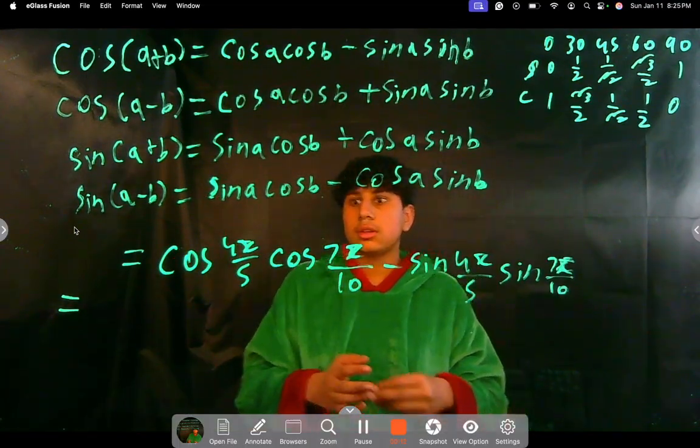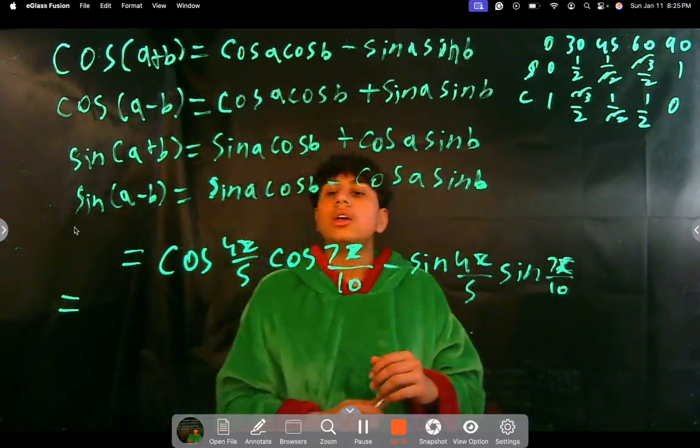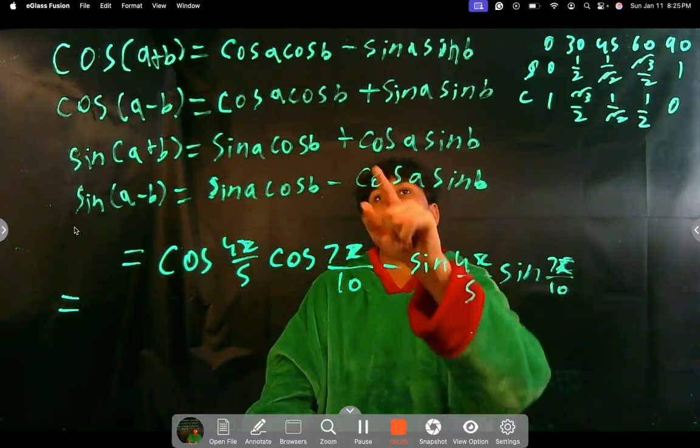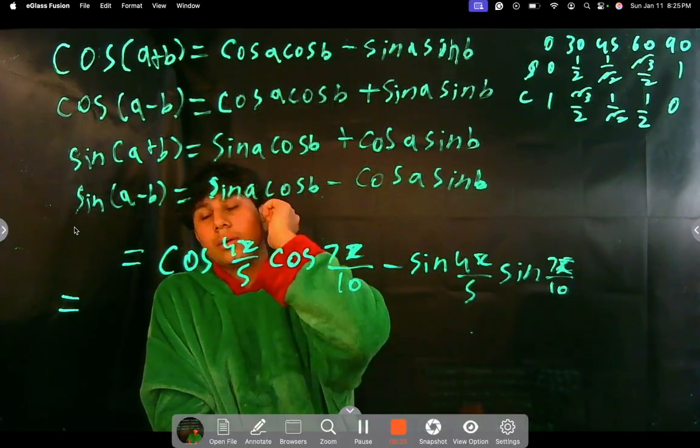What can we notice from here? We have cosine and cosine here, sine and sine. Well, it's obviously not a sine function, so it's going to be cosine. And since it's a negative here, it's going to have to be the addition.